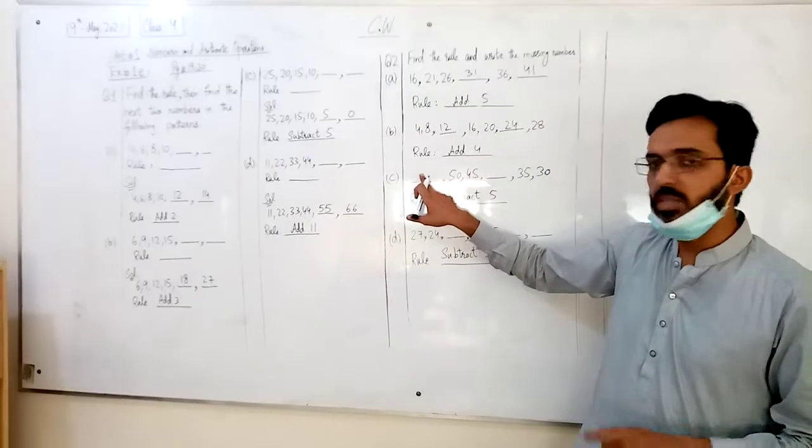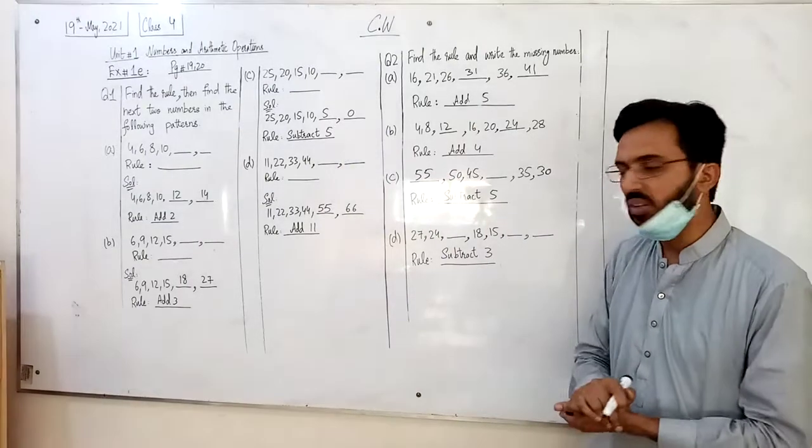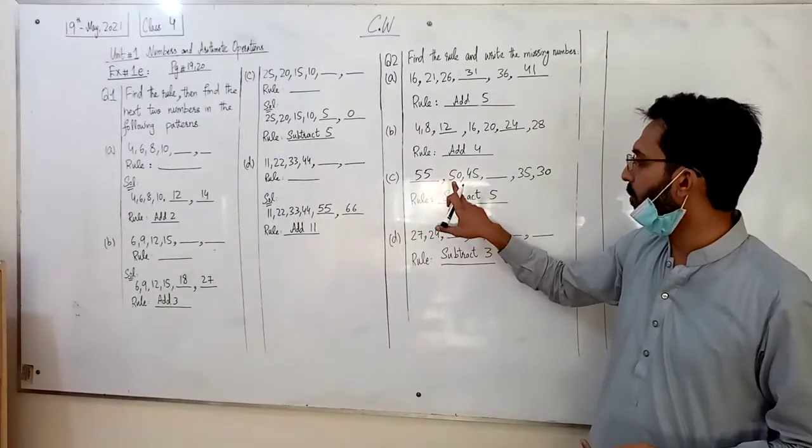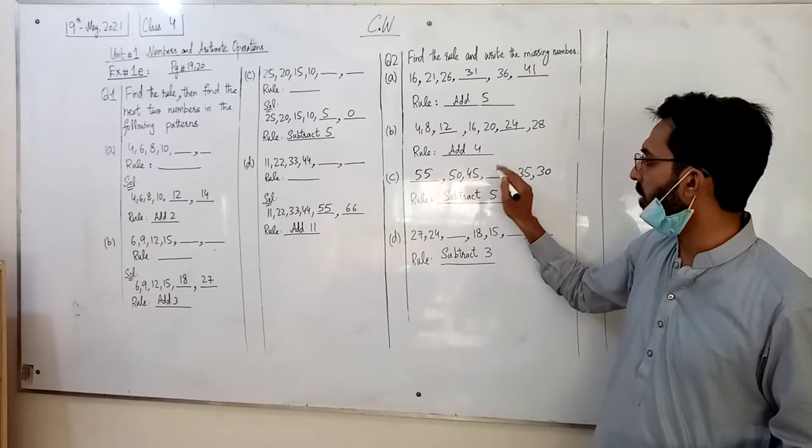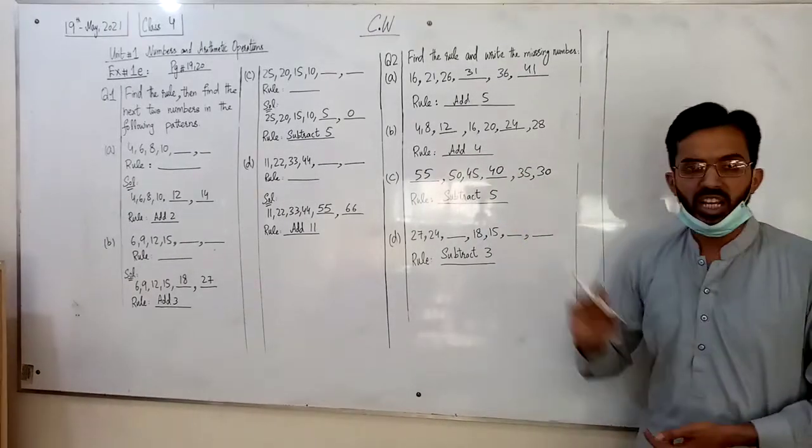इसमें क्या मैं भी लिखे? इसमें 5 minus करें 50 आपको. जी हां, 55. 55 minus 5 is 50, 50 minus 5 is 45, 45 minus 5 is 40, 35 और 30 आजेंगे.